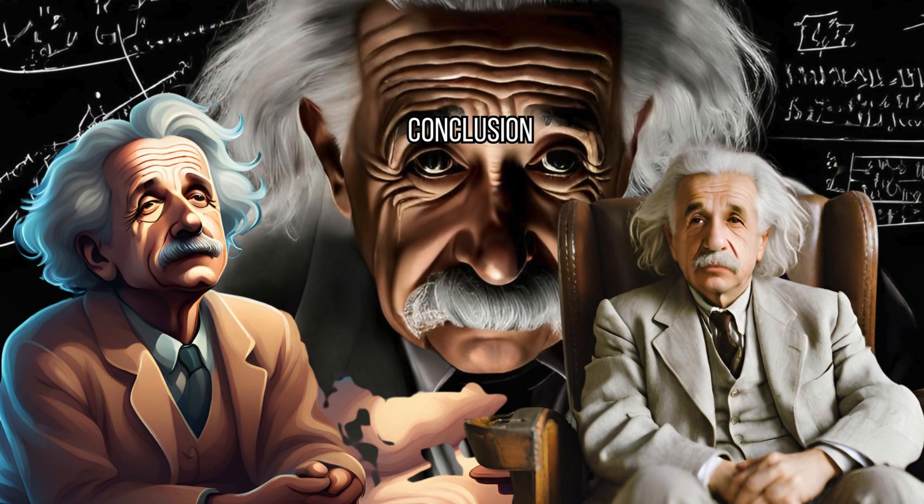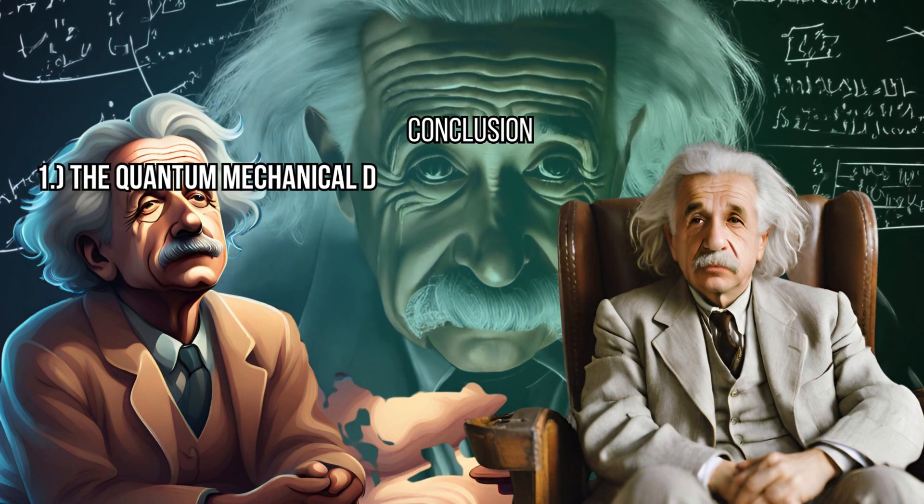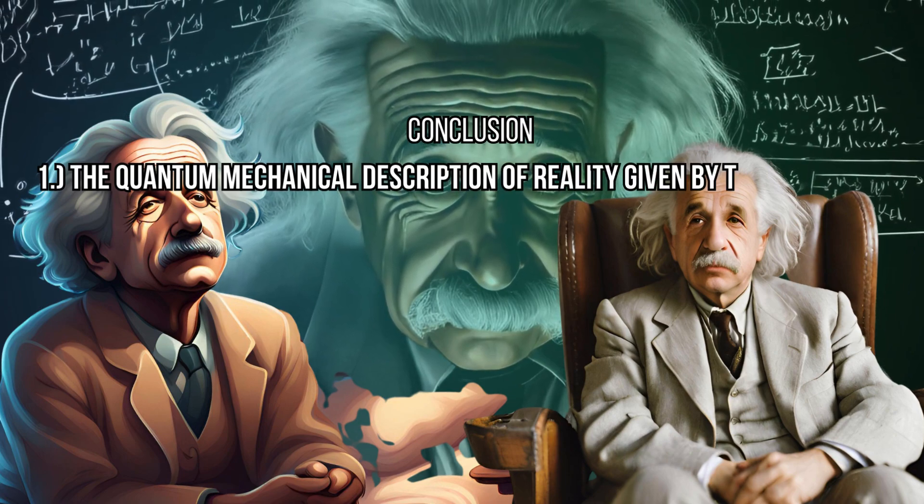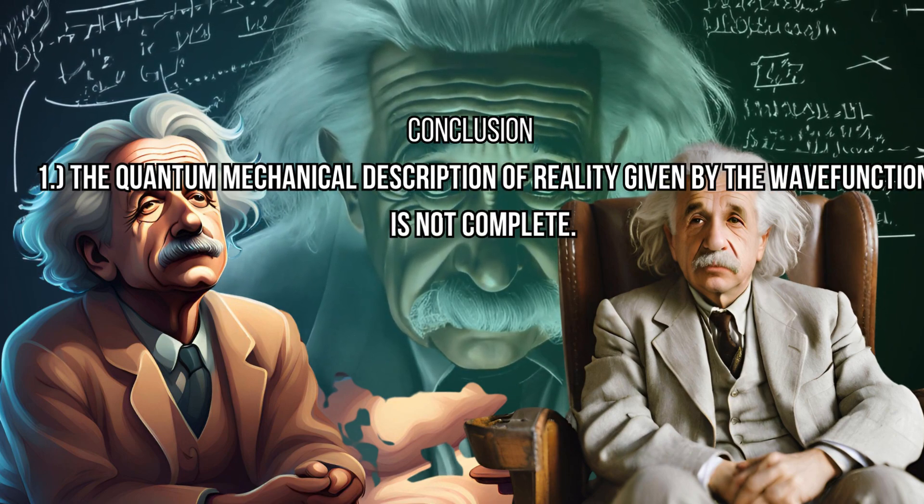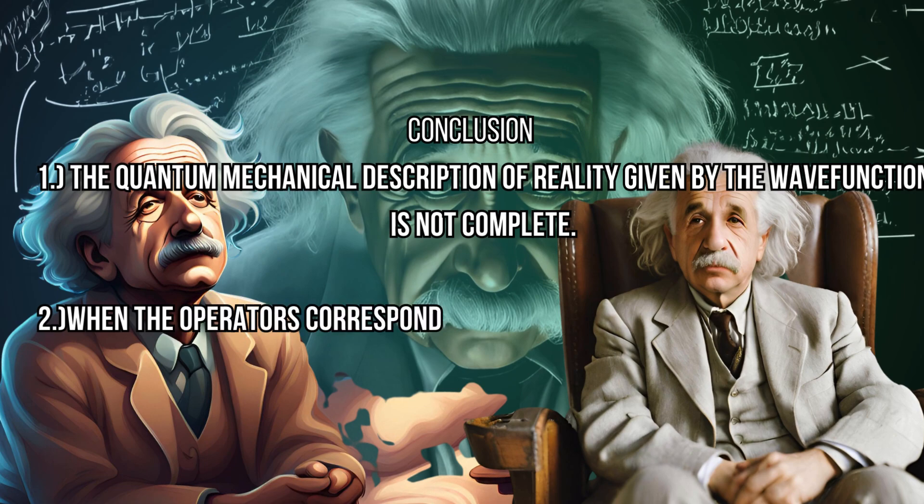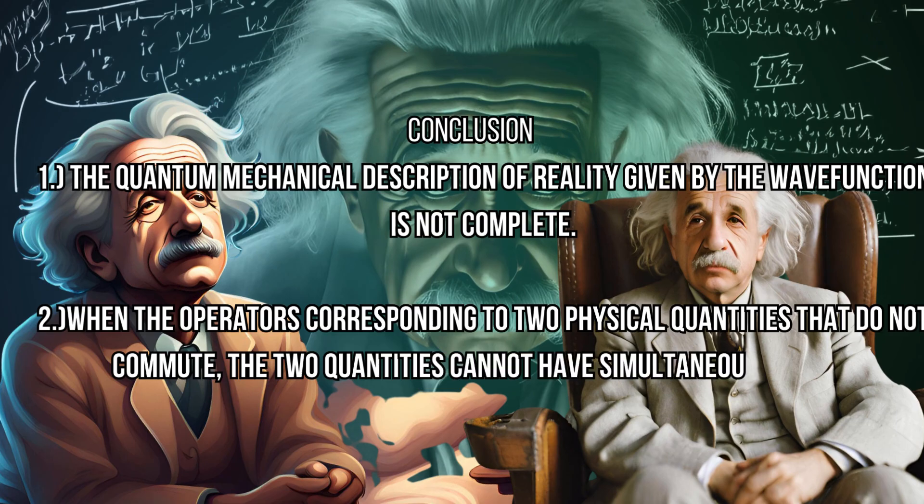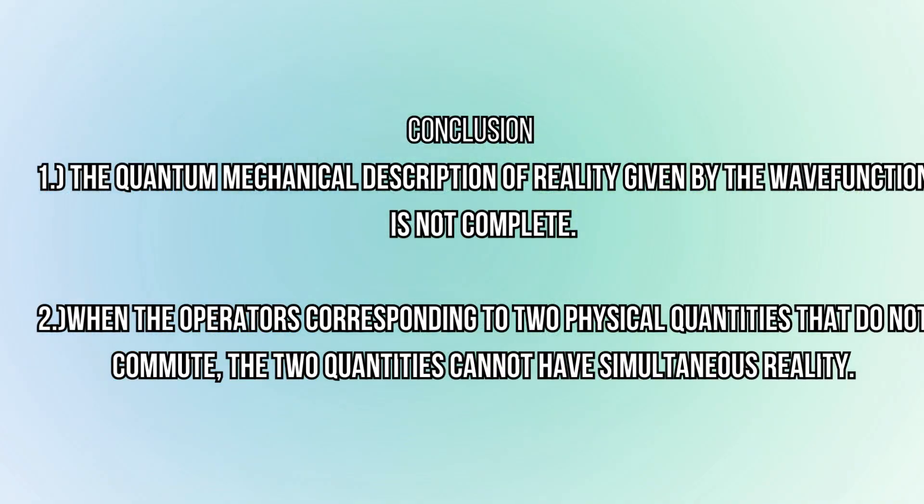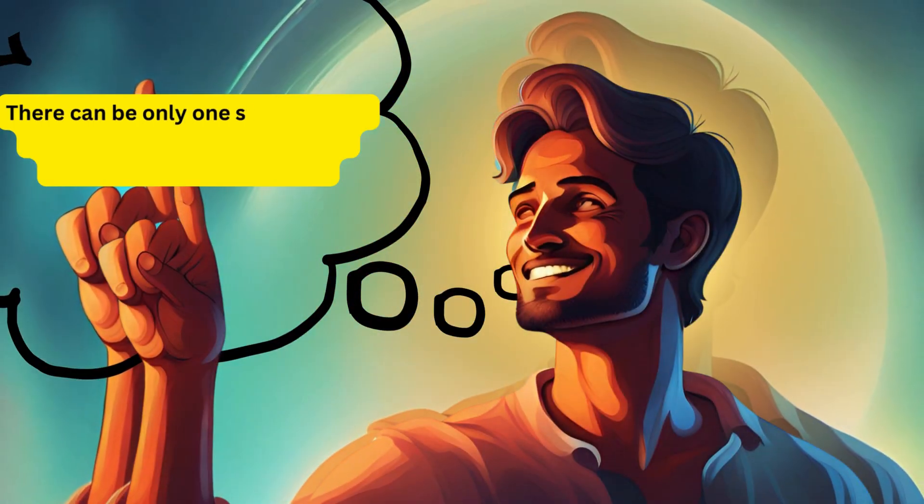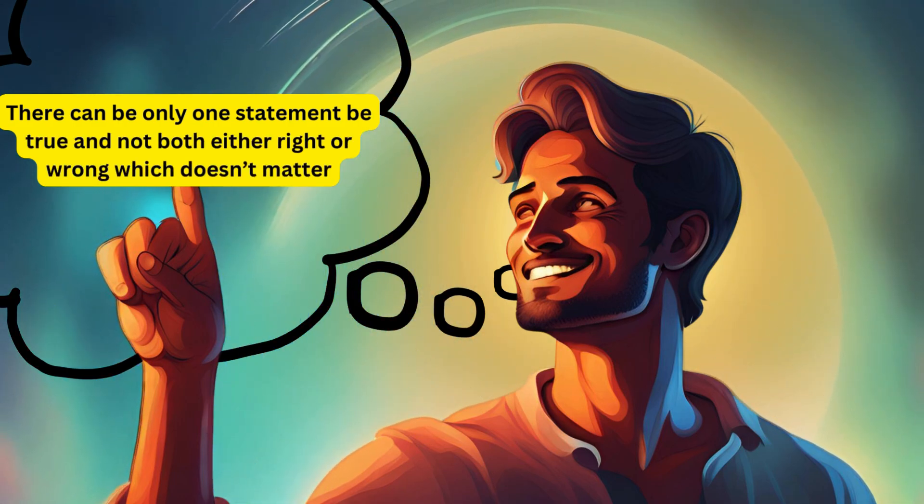That is either one, the quantum mechanical description of reality given by the wave function is not complete, or two, if the operators corresponding to two physical quantities do not commute, then the two quantities cannot have simultaneous reality. There can be only one statement be true and not both, being either right or wrong, which doesn't matter.